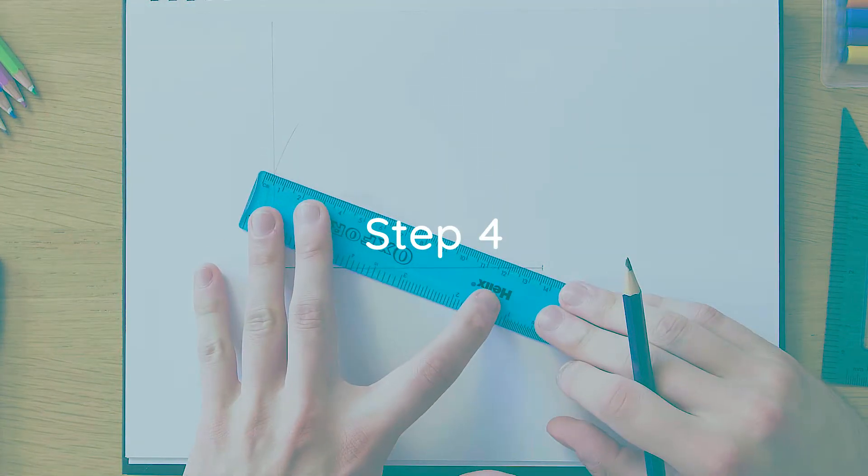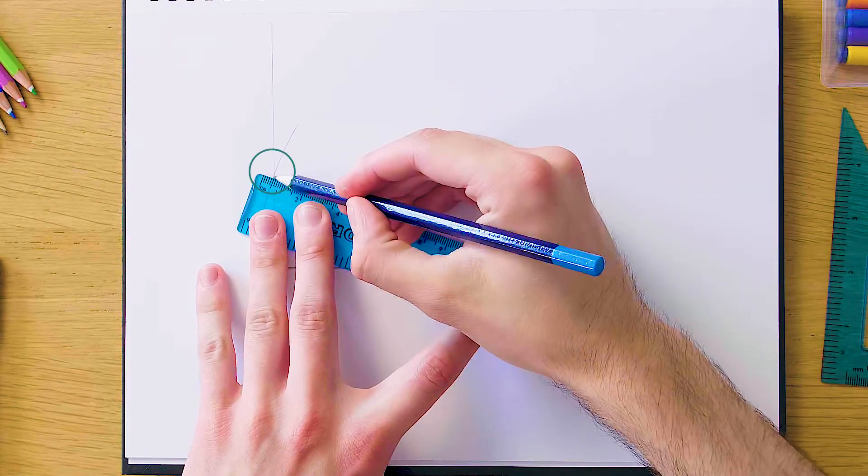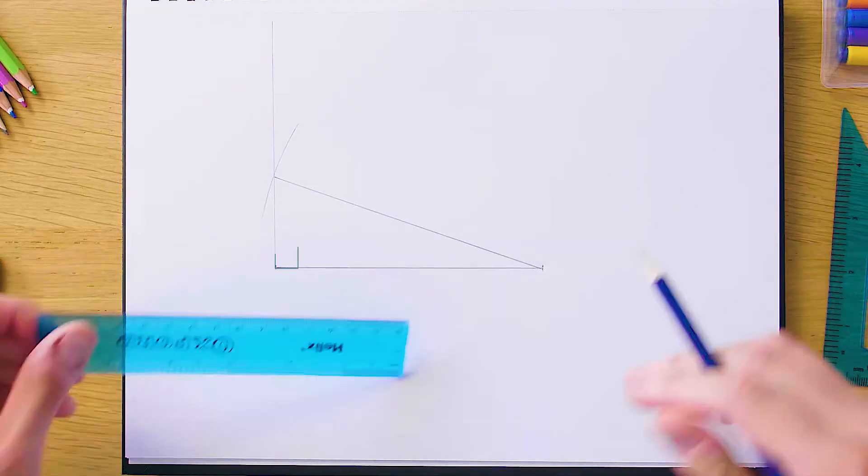And our final step is just going to be to connect this intersection to our final vertex to complete the triangle. As you can see now we have our nice right angle triangle.